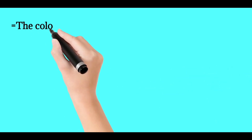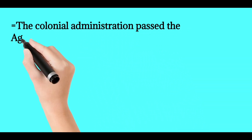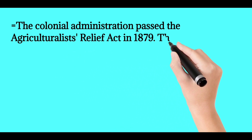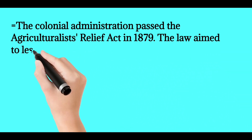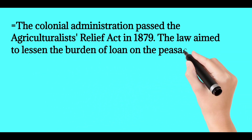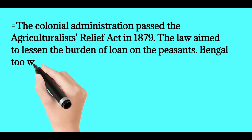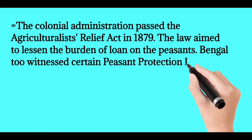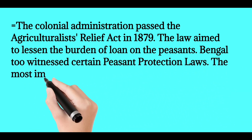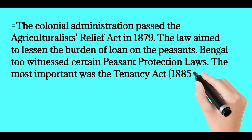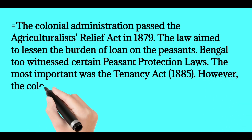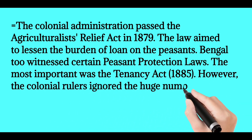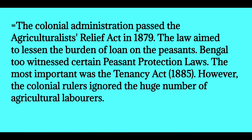The colonial administration passed the Agriculturalist Relief Act in 1879. The law aimed to lessen the burden of loan on the peasants. Bengal too witnessed certain peasant protection laws. The most important was the Tenancy Act, 1885. However, the colonial rulers ignored the huge number of agricultural laborers.